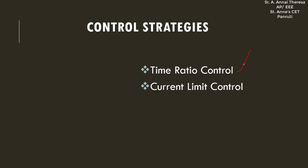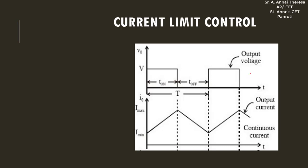We have seen about time ratio control with its two types: pulse width modulation (constant frequency) control and variable frequency control. The second main control strategy is current limit control. In this method, the current is maintained between a minimum value and a maximum value. When the current is at minimum, the chopper turns on and current starts rising until it reaches the maximum value. When it reaches maximum, the chopper turns off and current falls back to minimum.